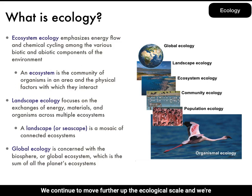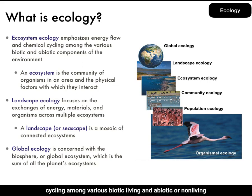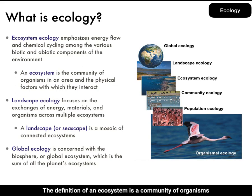Moving further up the ecological scale, we reach ecosystem ecology, which emphasizes energy flow and chemical cycling among various biotic (living) and abiotic (non-living) components of the environment. The definition of an ecosystem is a community of organisms in an area and the physical factors with which they interact.